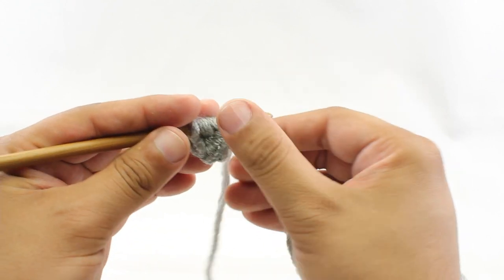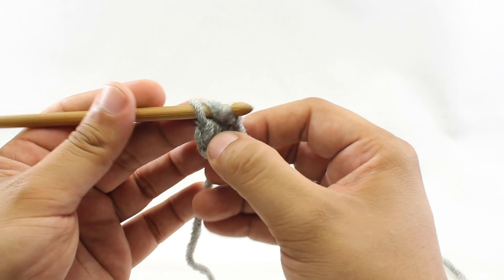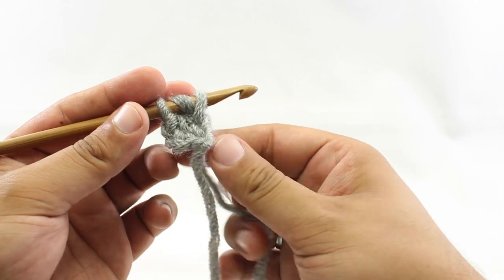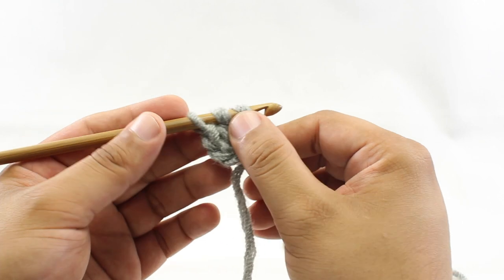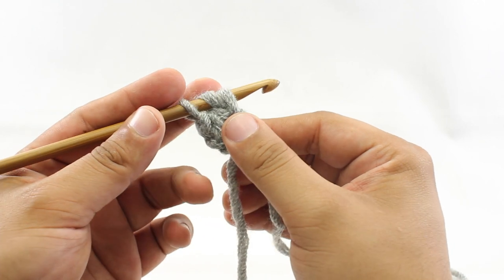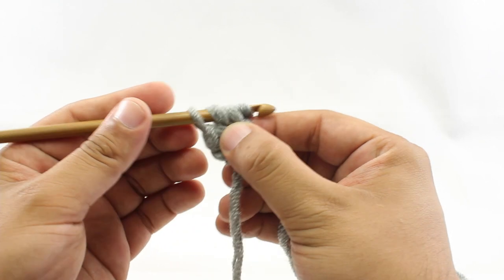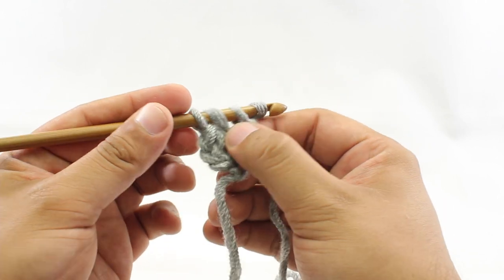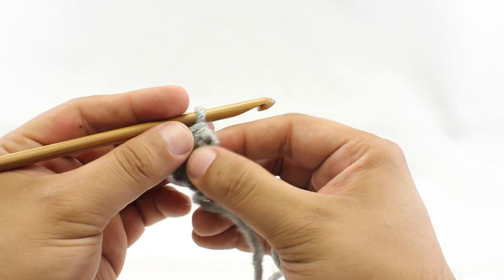Now we're going to yarn over and we're going to draw through those two loops or the two little bars. And then that's going to leave us with three loops on our hook. We're going to yarn over and draw through just the first loop. And then we'll yarn over and draw through all three loops that are on our hook.